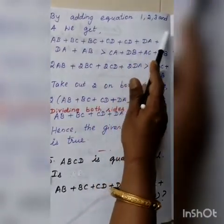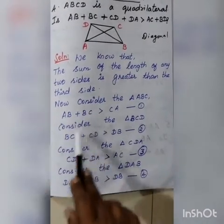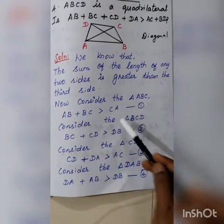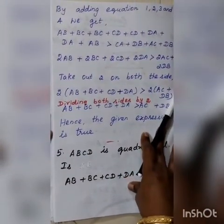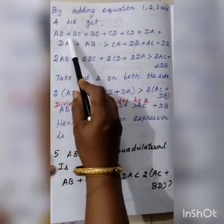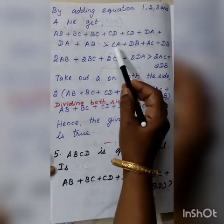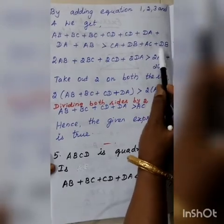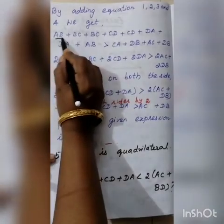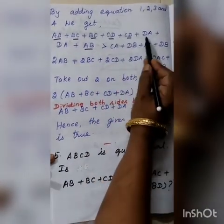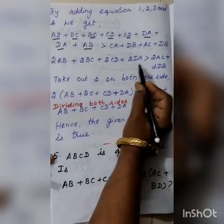By adding equations 1, 2, 3, and 4, on the left-hand side we get: AB plus BC, plus BC plus CD, plus CD plus DA, plus DA plus AB. This simplifies to 2AB plus 2BC plus 2CD plus 2DA. This is greater than the right-hand side.